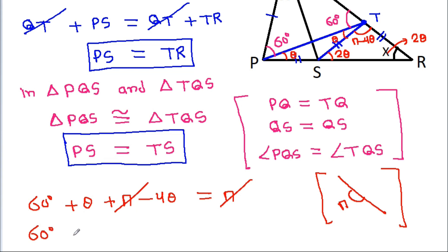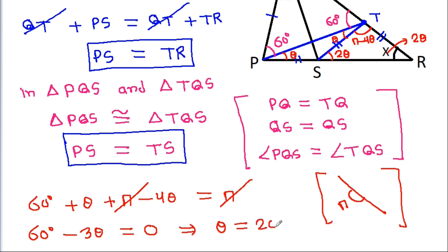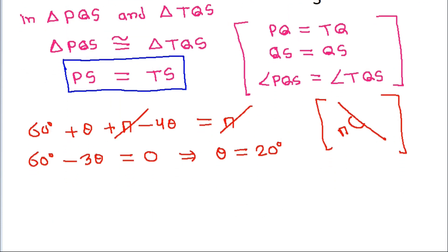Pi will get cancelled, so 60 degrees plus theta minus 4 theta equals 0. That gives 60 minus 3 theta equals 0, so theta is equal to 20 degrees. And since x is equal to 2 theta, x is equal to 40 degrees.